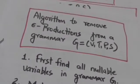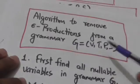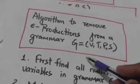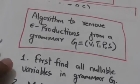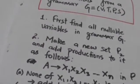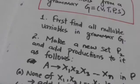There is an algorithm to remove empty productions from a given grammar G, defined by the quadruple V, T, P, S — where V is the set of variables, T is the set of terminals, P is the set of production rules, and S is the start symbol. First of all, we will find all nullable variables in grammar G. How to find nullable variables was studied in the previous tutorial.